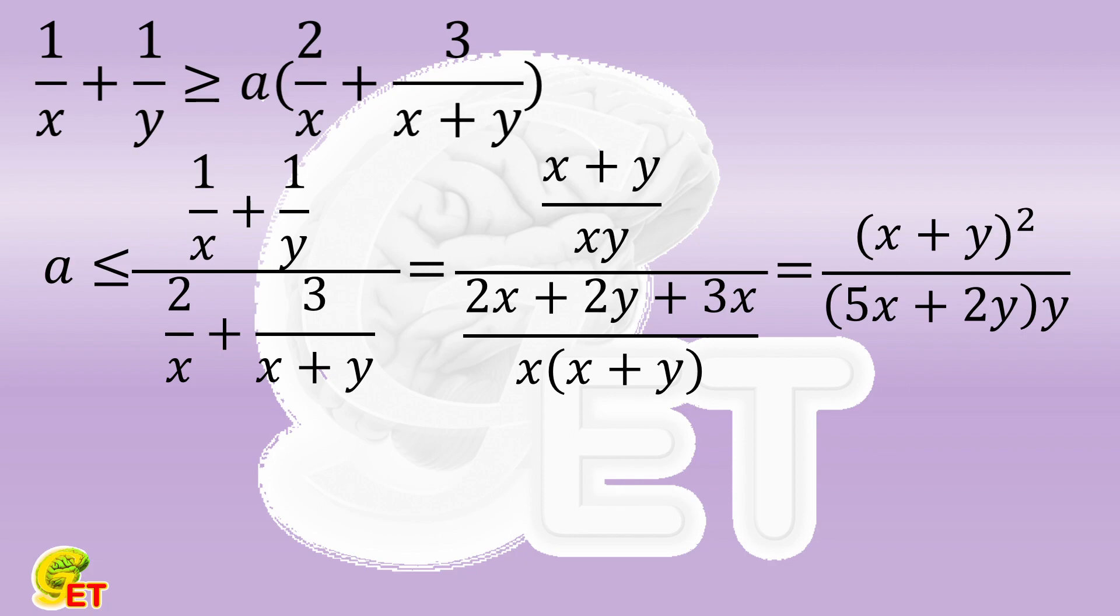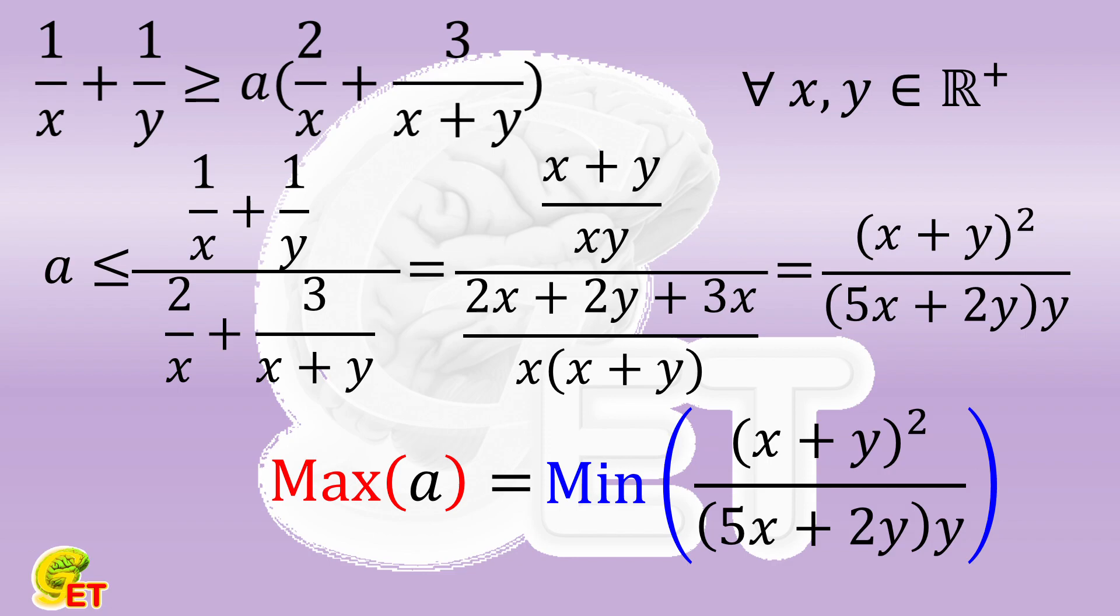This inequality is true for any x and y bigger than 0. What does it mean? It means that even if the expression on the right reaches its minimum value, it is still not smaller than a. That is to say, the maximum value of a is the minimum value of this expression on the right.